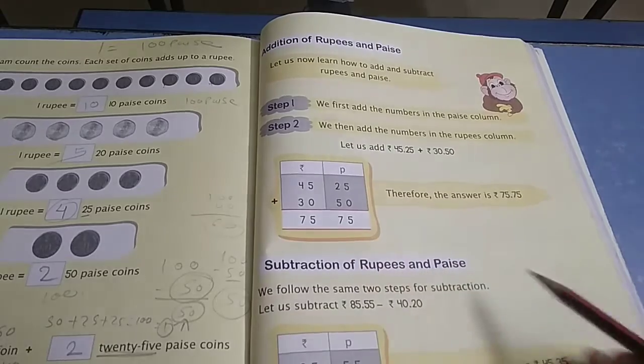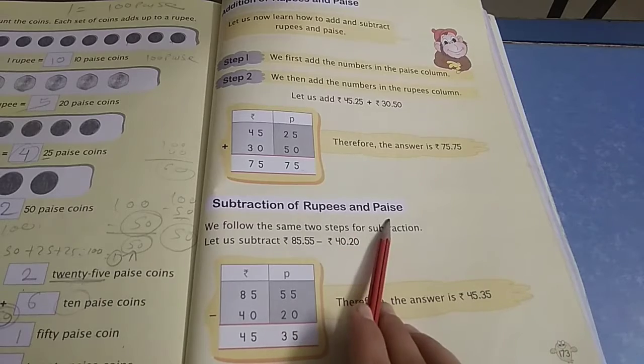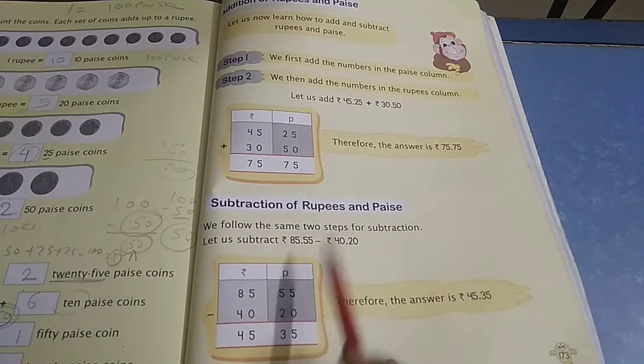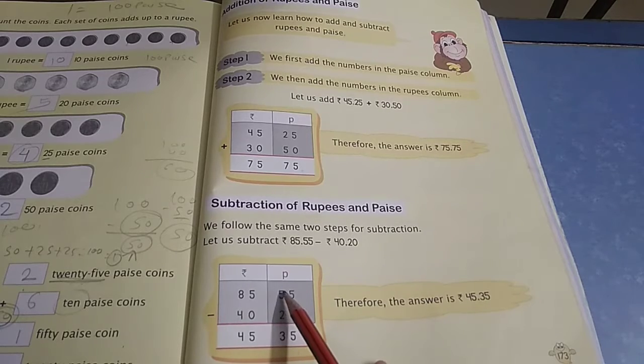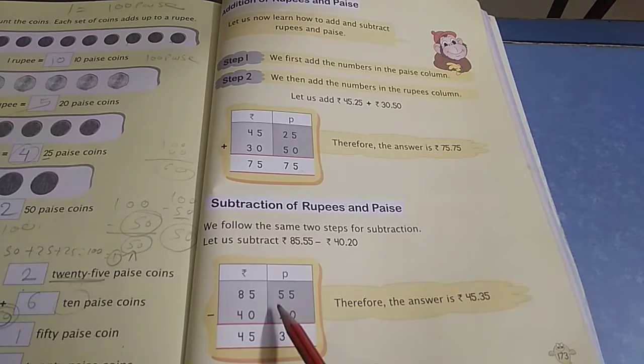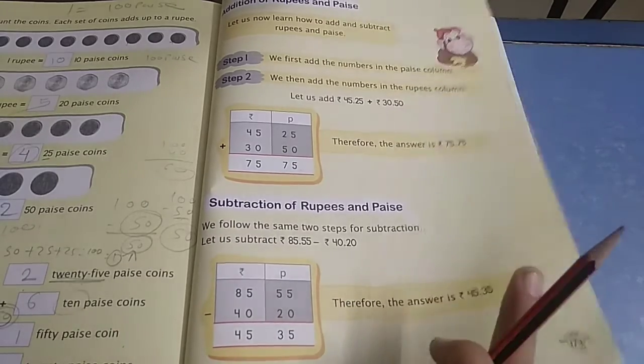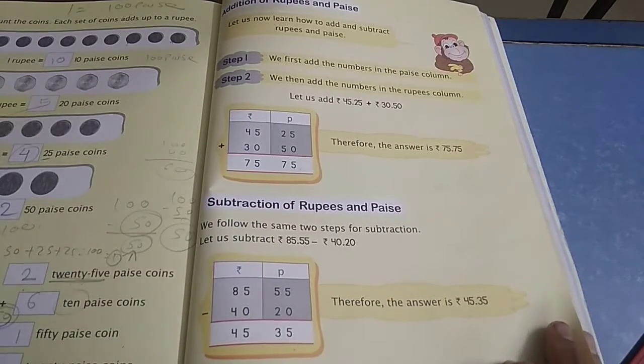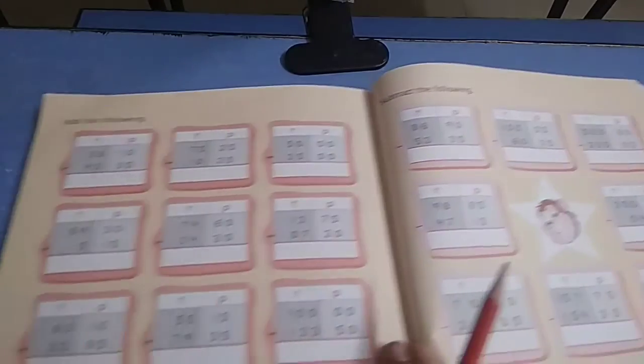Okay, now subtraction of rupees and paise. 5 minus 0 equals 5, 5 minus 2 equals 3, 5 minus 0 equals 5, 8 minus 4 equals 4. We've done addition and subtraction the same way.